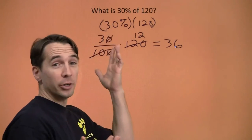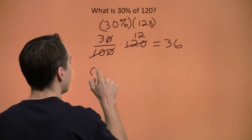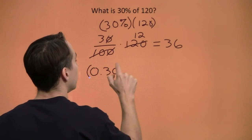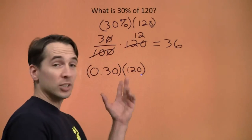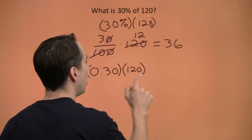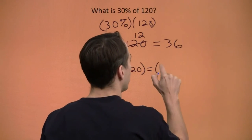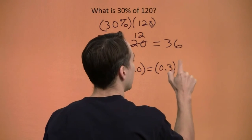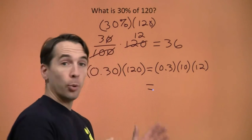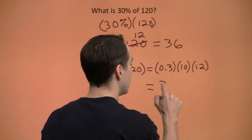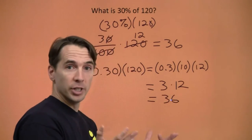Now, we also could have just turned the 30 percent into a decimal by moving the decimal point over two places, and that leaves us with .30 times 120. Now, I'm going to break this 120 up into a 10 and a 12, because that 10 will help wipe out the decimal point. That .30 is just .3 times 10 times 12. 10 times .3 gives us 3. 3 times 12 is 36.